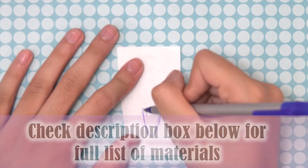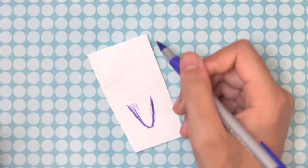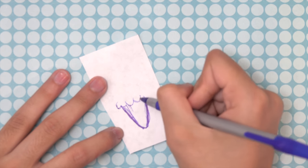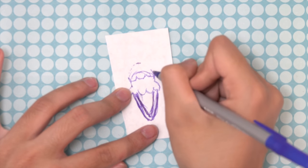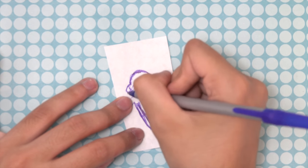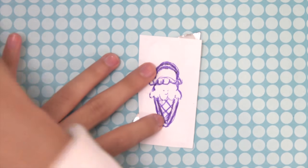First I got out some paper and on my paper I'm going to draw out my template. You can draw any design that you would like, but I went for an ice cream cone today. I drew my two-tiered ice cream cone using a pen. You can also use a pencil, it really doesn't matter. Once I'm happy with my template...